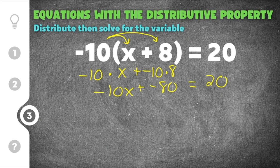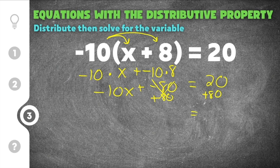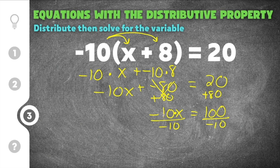We can rewrite this as negative 10x minus 80 equals 20. To move the 80, we add 80 to both sides so the 80s cancel. Then 20 plus 80 is 100, giving us negative 10x equals 100. We divide both sides by negative 10 — since the coefficient is negative, we must divide by negative 10. The negative 10s cancel, and 100 divided by negative 10 is negative 10.